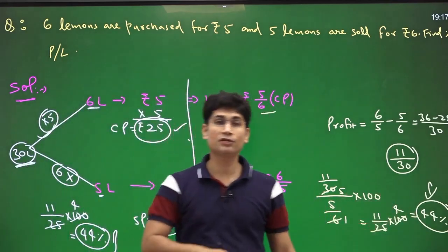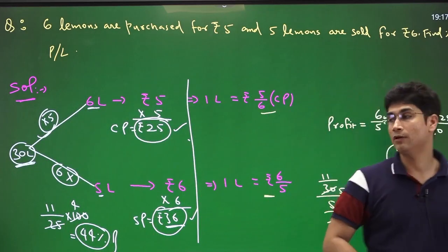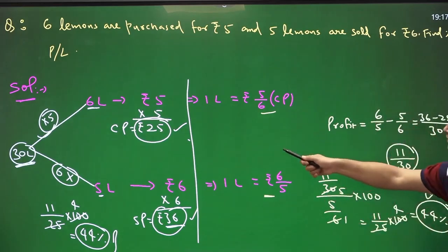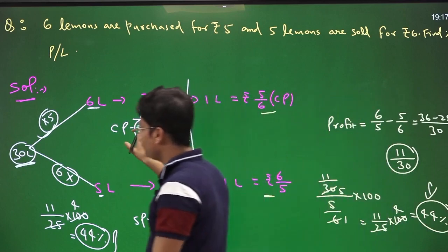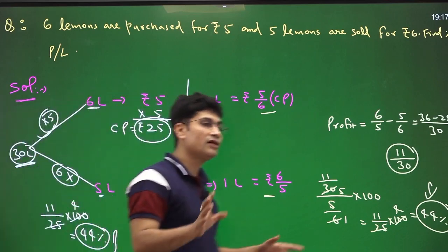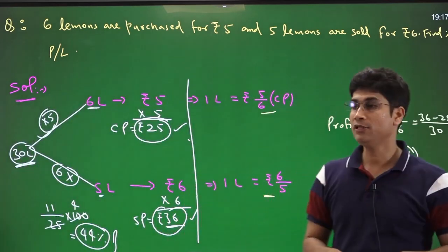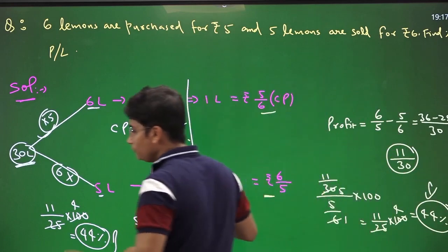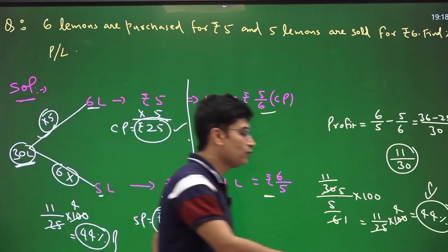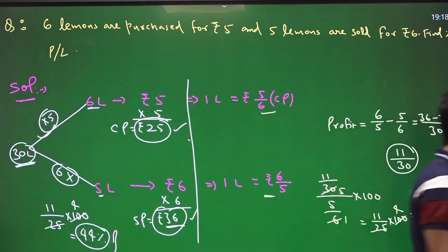That is the quicker approach compared to the basic method. Now I'll give you the fastest way — a concept I call the NANA concept — using ratio and proportion.